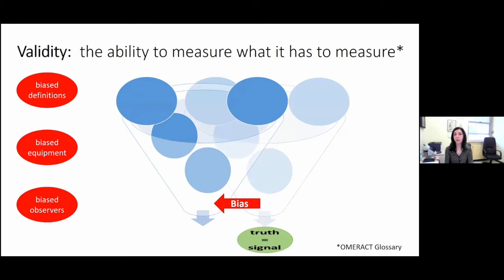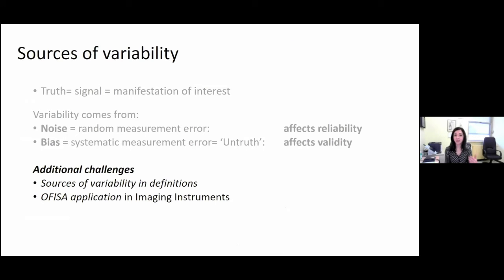Looking at validity — the ability to measure what has to be measured according to OMERACT — what can affect this measurement? First, a biased definition of our target domain. Second, biased equipment that is unable to measure the target domain. And also biased observers who do not know the target domain. Therefore, when applying FISA to imaging instruments, it is important to take into account the challenges related to the sources of variability in the definition of the target domain, and to know how FISA should be applied to them.